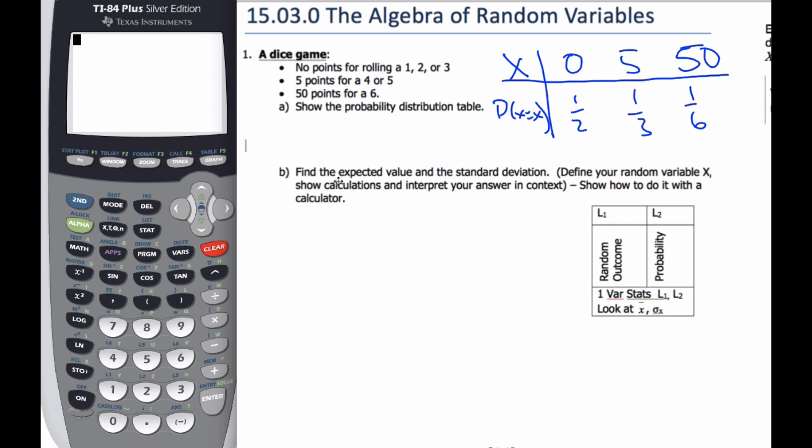If I want to find the expected value and the standard deviation, well, we need to then go to do the calculation. In our formula booklet, we can see there's lots of different formulas for different, all called the same thing, and you have to pick the right one. So this is for a discrete random variable.